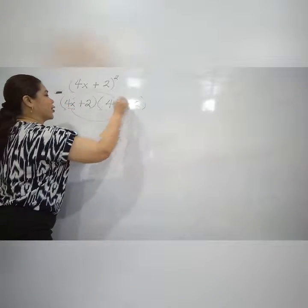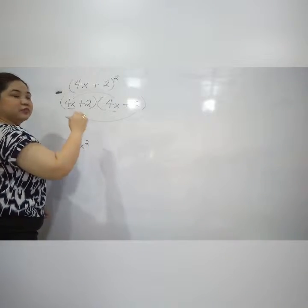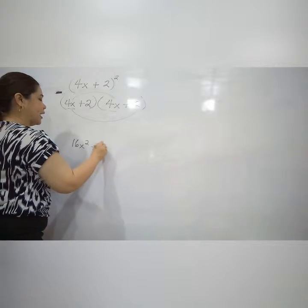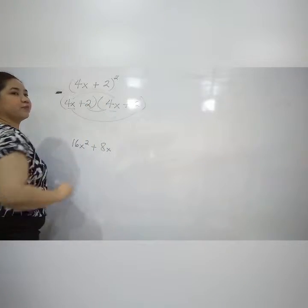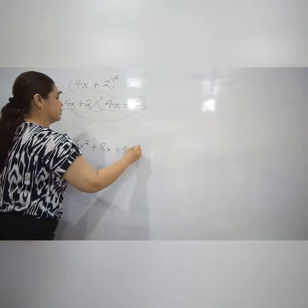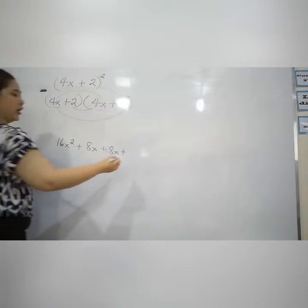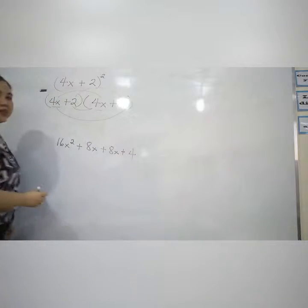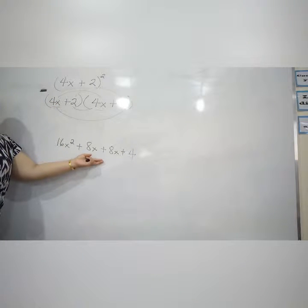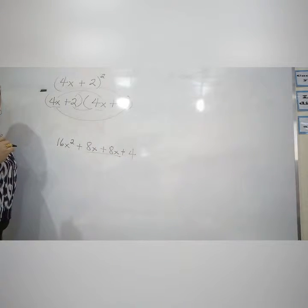Next, the outer terms. 4 times 2, 8x. Okay, plus 8x. Next, 8x plus 8x. Plus the last term, 4 plus 4. Okay.